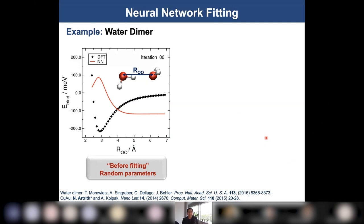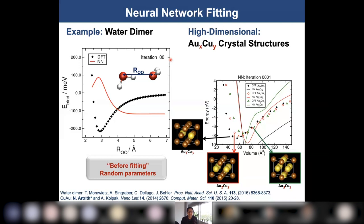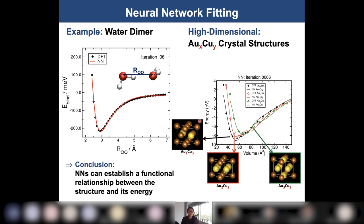Here is an example of realistic neural network training. We can train a neural potential on reference DFT data — shown as black diamond shapes — and the neural network prediction is the red curve. We can also construct neural potentials for solids or crystal structures. In this case, we developed a neural potential to describe copper-gold alloys. After a few iterations of optimization, our neural potential can interpolate the DFT data very accurately, as you can see.